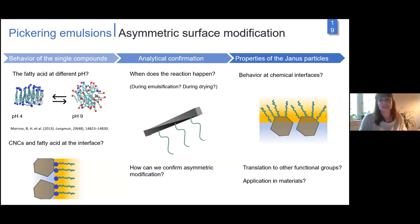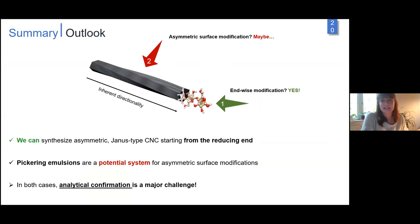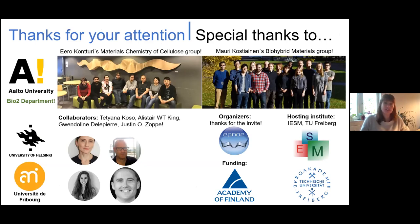We need to understand the properties of these asymmetrically modified CNCs, if we can translate this reaction to other functional groups, or use these particles in new materials. I want to summarize this talk: yes, we can use end-wise modification for fabricating Janus-type CNCs. I think Pickering emulsions are very promising systems for asymmetric surface modification, but we still have to confirm. Analysis of these systems is a major challenge.